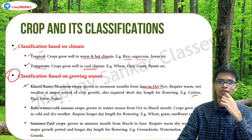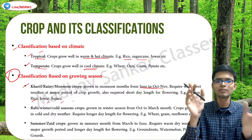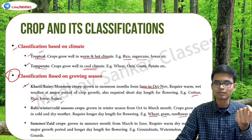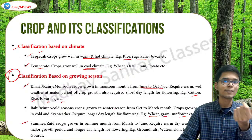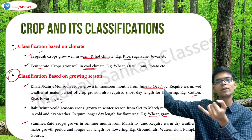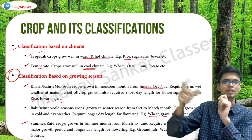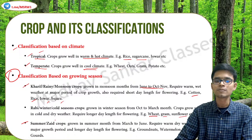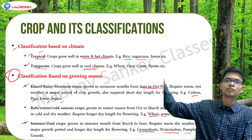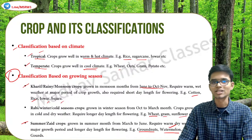Rabi crops are also known as winter crops or cold season crops — grown between October and March, with the core period being December to February. These crops include wheat, gram, and sunflower. Zaid crops are also known as summer crops, grown from March to June — the remaining period completing the full year. Zaid crops include groundnuts, watermelon, pumpkins, and gourds. Think about summer season — you see street vendors selling watermelon, which is exactly when these crops are grown.